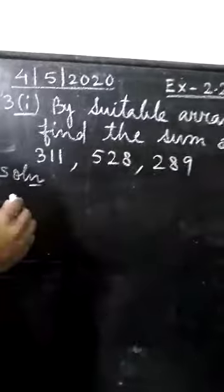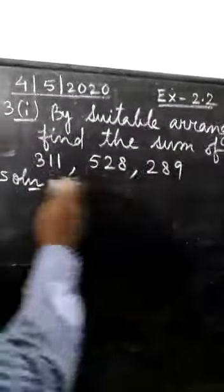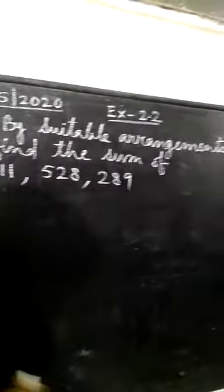Now, question number 3, the first one. By suitable arrangements, find the sum of. We have to add these three numbers by suitable arrangements.